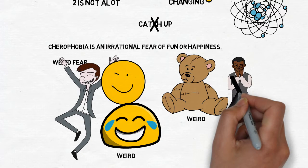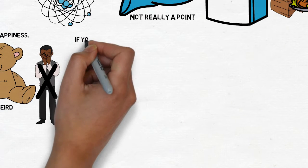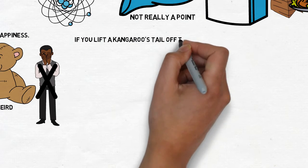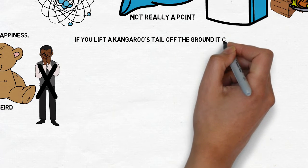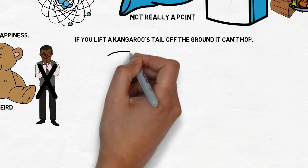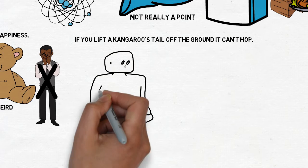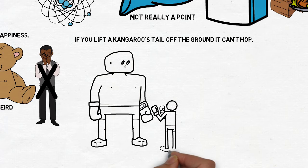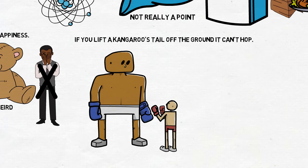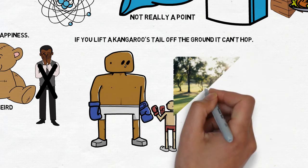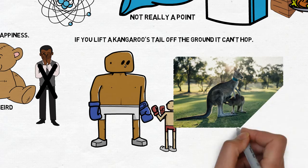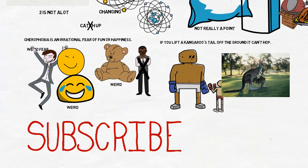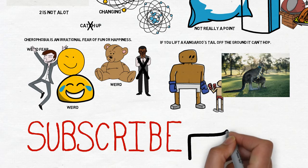The next fact is that if you lift a kangaroo's tail off the ground, it can't hop. And this is another one of those weird facts that doesn't really make sense. And if you lift a kangaroo's tail off its ground, it can't hop. Well, the tail's probably pretty heavy, so I don't think it can.